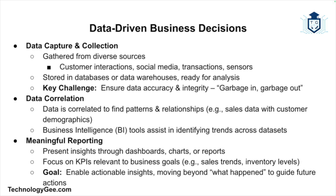The third stage is meaningful reporting. After correlating data, the next step is to present it in a way that decision makers can understand, often through dashboards, charts, or reports. Reports should focus on key performance indicators relevant to the business's goals. For example, a retail company might focus on sales trends, inventory levels, and customer satisfaction scores. Reporting is most effective when it enables actionable insights.